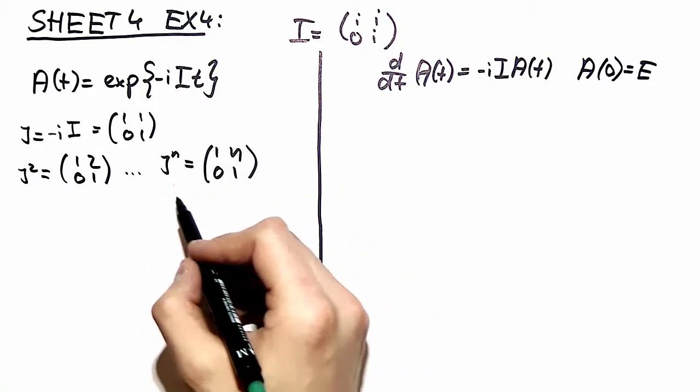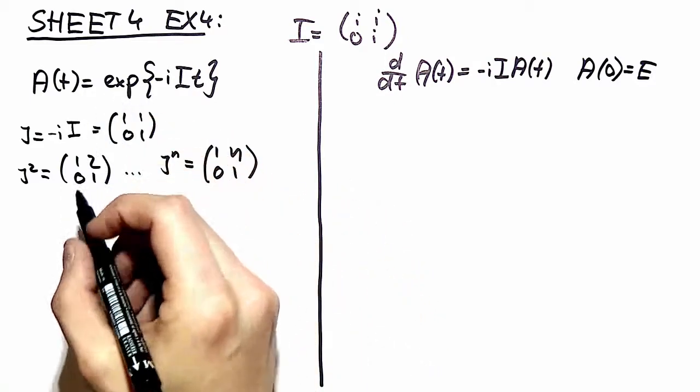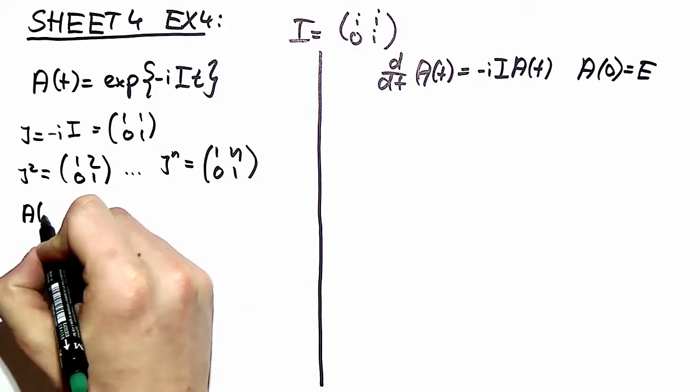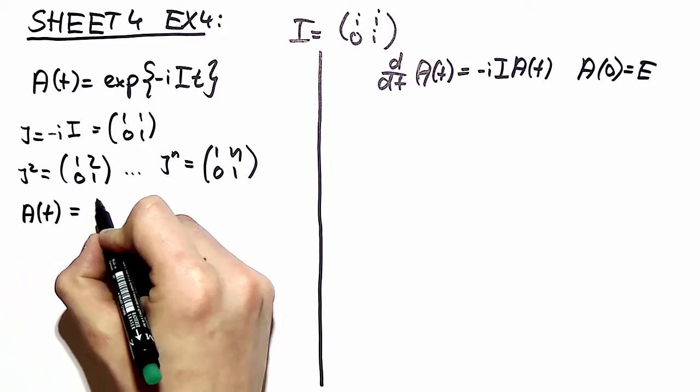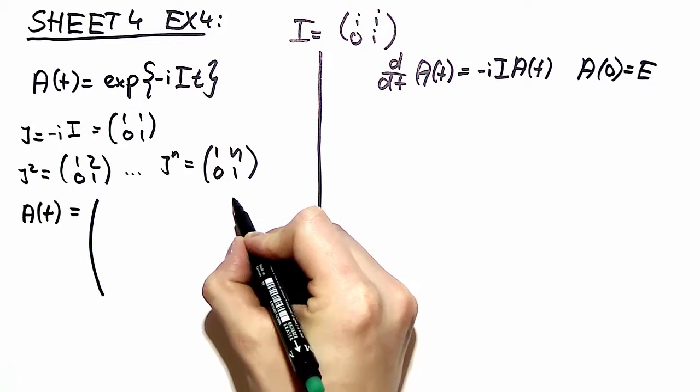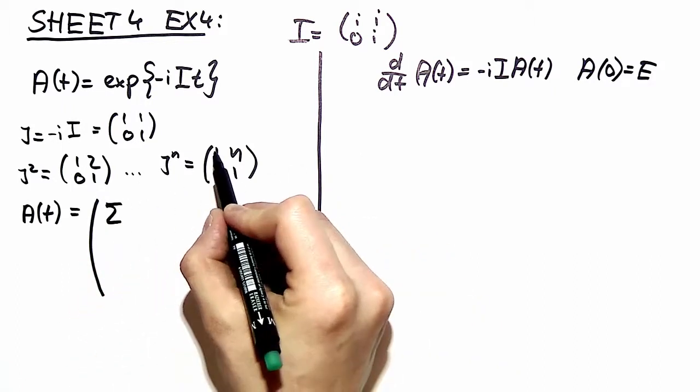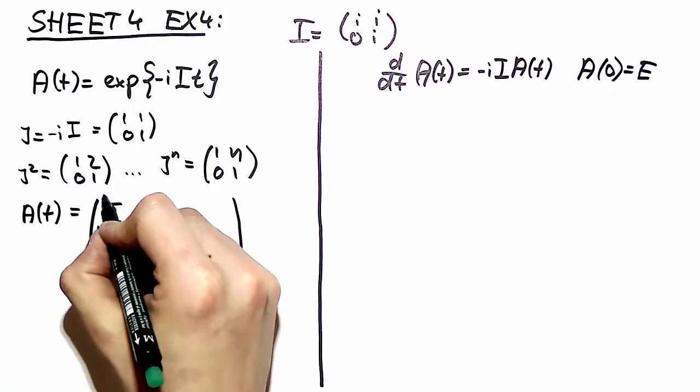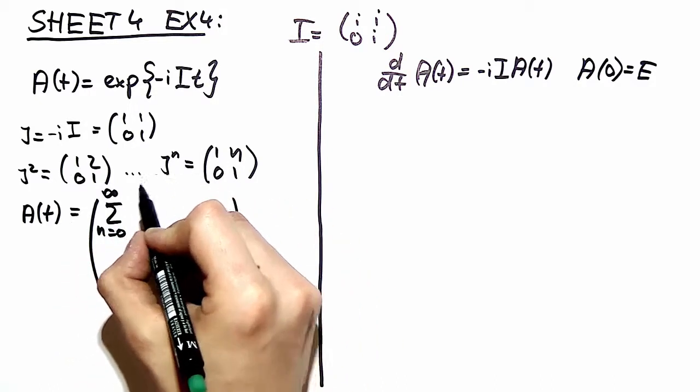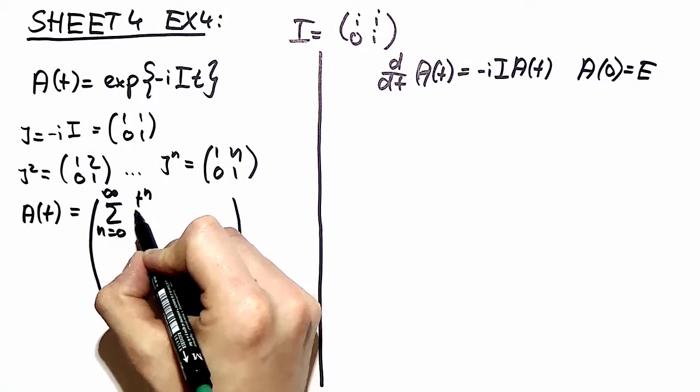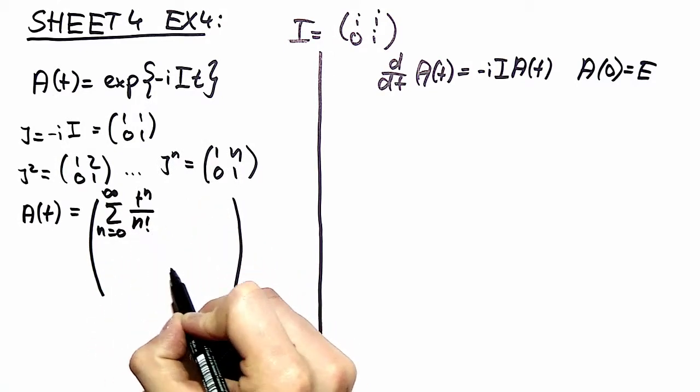So we have four matrix elements right here. The first is always, so you have always the 1 on the upper right, this is J to the n equals 1 so you have t to the n over n factorial. The same is true for the bottom right corner, t to the n over n factorial.